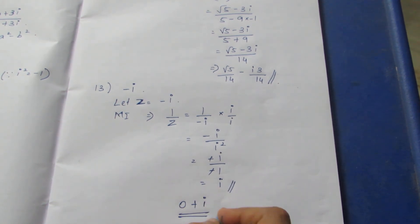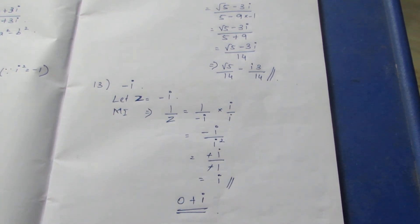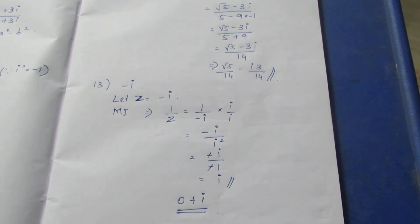Since i squared equals minus 1, the denominator becomes minus 1, and the result is i divided by minus 1, which gives minus i — wait, the final answer part is i. This can be the final answer; if you want to write it in a plus ib form, that's all with the sum. Thank you.